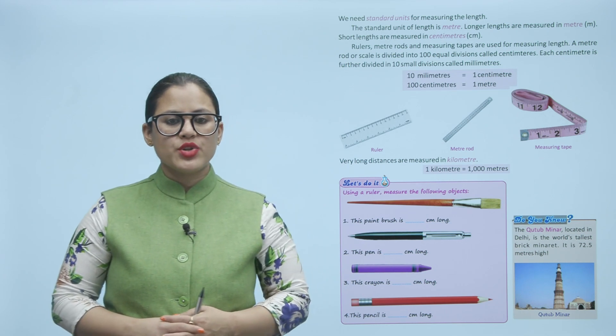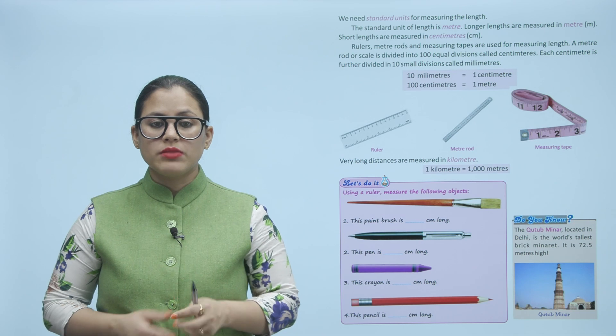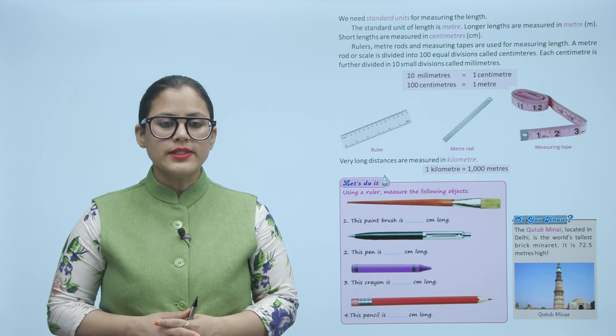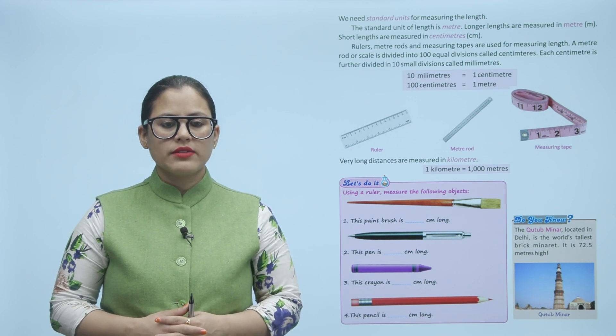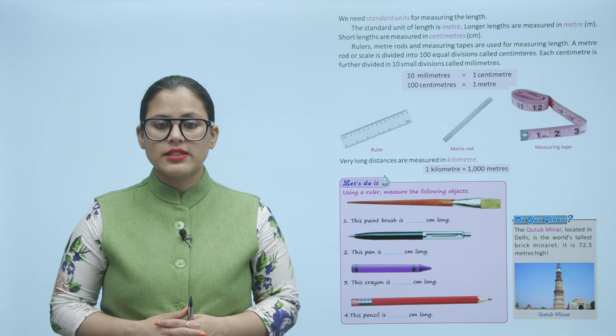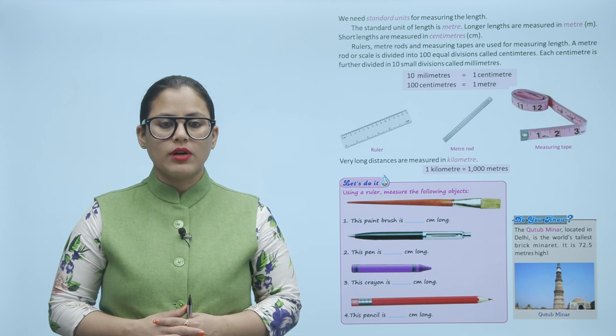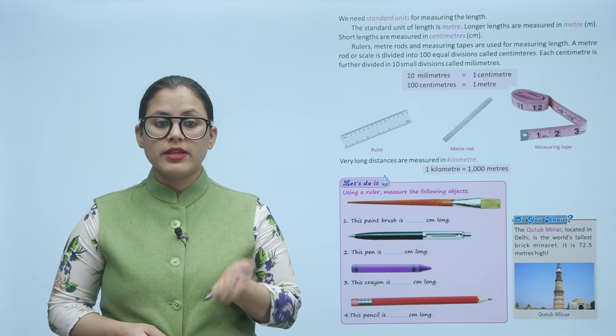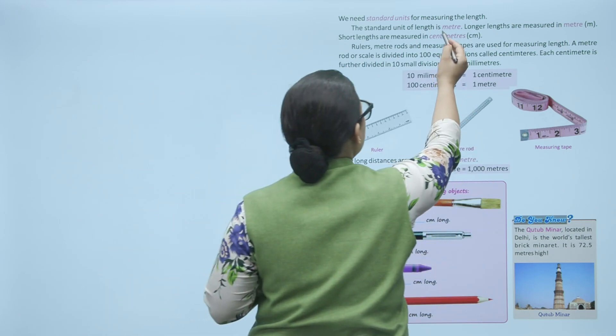We need standard units for measuring the length. The standard unit of length is meter. Longer lengths are measured in meter. Short lengths are measured in centimeters. Rulers, meter rods and measuring tapes are used for measuring length. A meter rod or scale is divided into 100 equal divisions called centimeters. Each centimeter is further divided into 10 small divisions called millimeters.